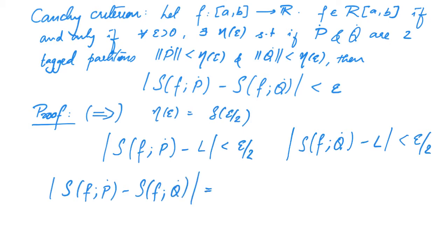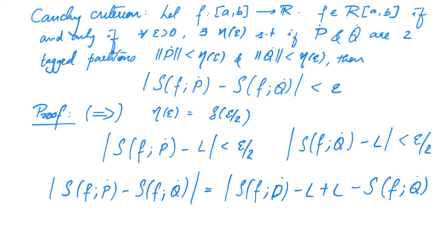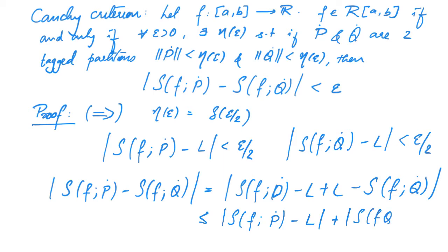So |S(f, P-dot) − S(f, Q-dot)| equals |S(f, P-dot) − L + L − S(f, Q-dot)|, which by the triangle inequality is less than or equal to |S(f, P-dot) − L| plus |S(f, Q-dot) − L|, which is less than or equal to epsilon by two plus epsilon by two, that is equal to epsilon. And that completes the proof of this direction.